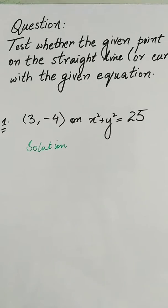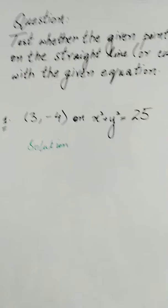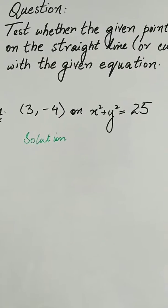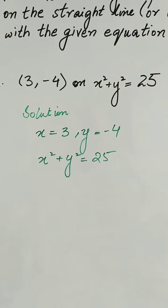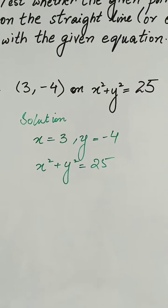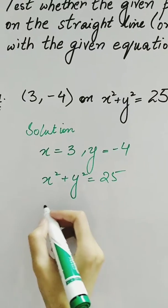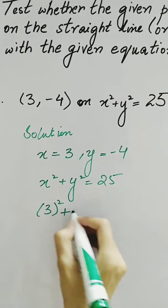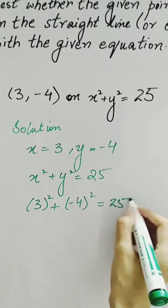In the first question, we have coordinate given as (3, -4) and equation as x² + y² = 25. Here, x coordinate is 3 and y coordinate is -4. Simply putting the value of x and y into the equation, we have 3² + (-4)² = 25.